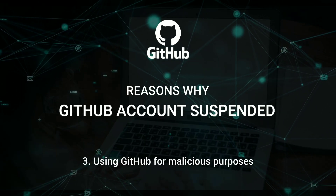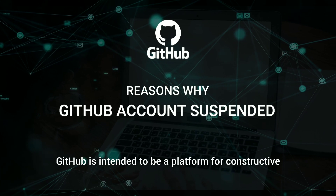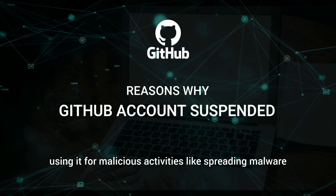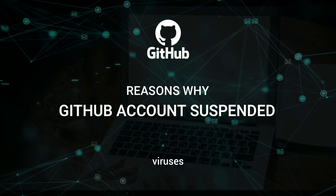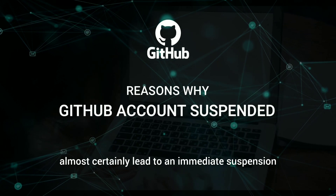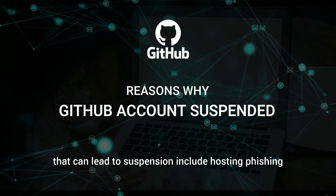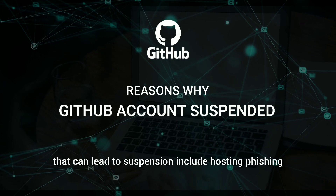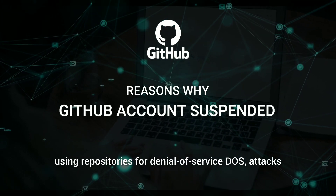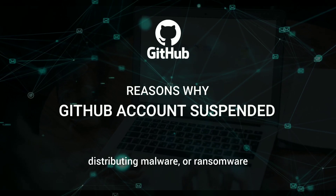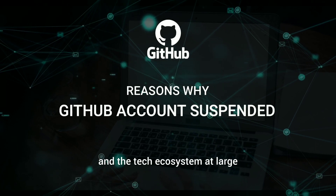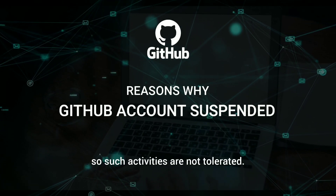3. Using GitHub for malicious purposes. GitHub is intended to be a platform for constructive collaboration and development. However, using it for malicious activities like spreading malware, viruses, or participating in hacking attempts will almost certainly lead to an immediate suspension. Some malicious activities that can lead to suspension include posting phishing or spam websites, using repositories for denial-of-service (DoS) attacks, and distributing malware or ransomware. GitHub prioritizes the safety of its users and the tech ecosystem at large, so such activities are not tolerated.